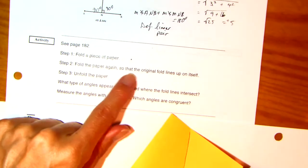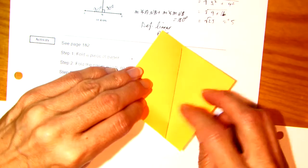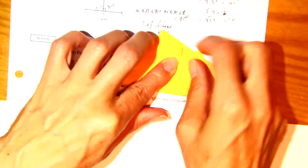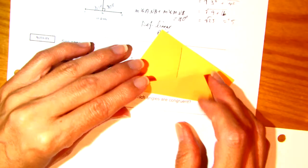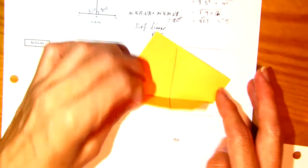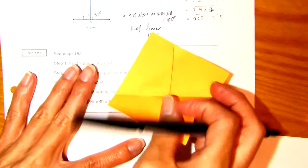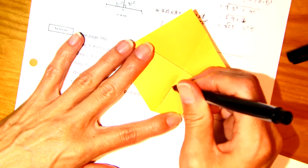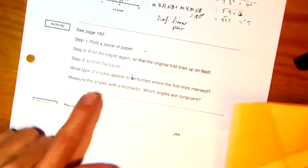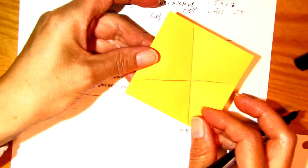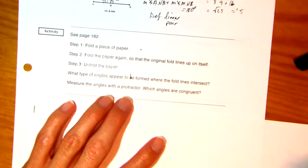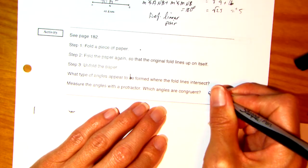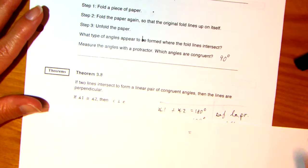All right, so step two says, fold the paper again so that the original fold lines up on itself. So what I'm going to do is take it so this line is going to be on top of itself. I don't know if you can see that. Can you see that through? I kind of have it like that. So I'm going to crease that. And then I'm going to fill in this line so you can see that also.